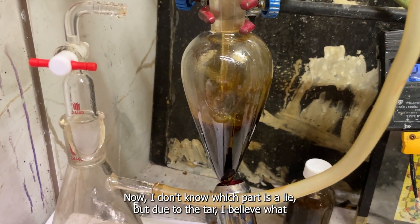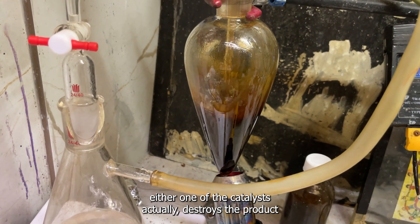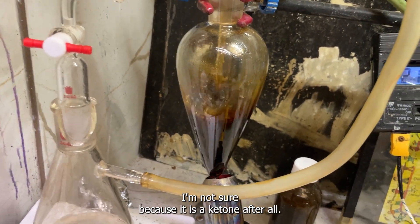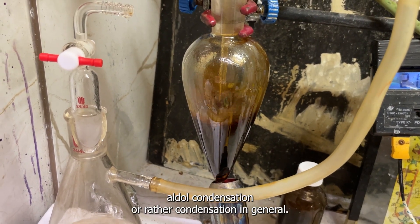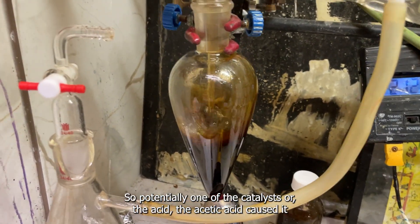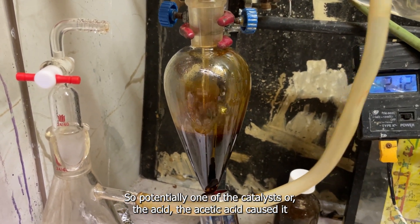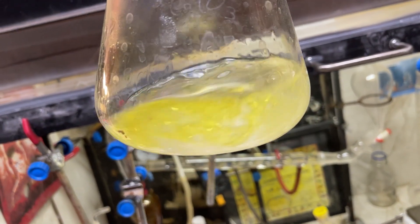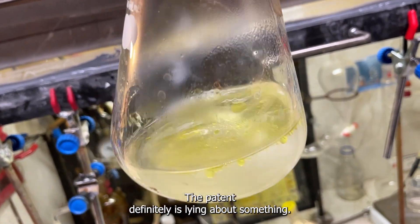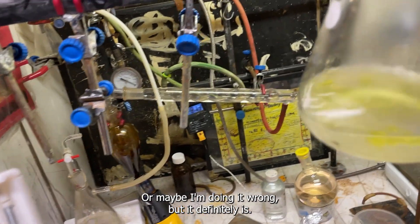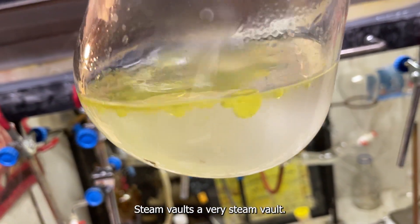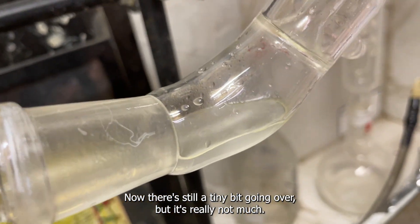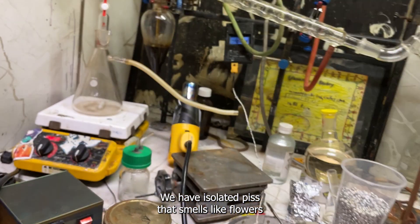This leads me to believe that they likely lied about some part of the reaction, because it should have a lot more yield than that much based on how much cyclohexanone I put in. I don't know which part is a lie, but due to the tar I believe either one of the catalysts actually destroys the product, or maybe the solvent does. I'm not sure, because it is a ketone after all and they're quite sensitive to aldol condensations and condensation in general. Potentially one of the catalysts or the acetic acid caused it, I don't know. Glorious, we have isolated piss that smells like flowers and kind of burnt rubber because tar.